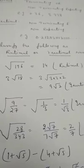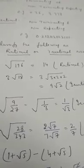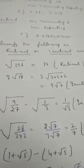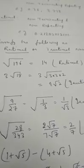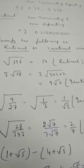Next, we take square root 9 by 27. It will become square root 1 by 3 or 1 by root 3. Again, it is irrational.